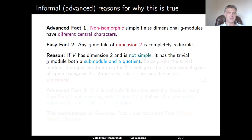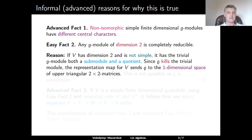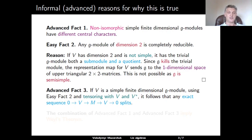An easy fact is that any G-module of dimension 2 is completely reducible. If we have a G-module of dimension 2 which is not simple, then it must have a one-dimensional sub-module and a one-dimensional quotient. The only one-dimensional G-module is the trivial G-module. Since G kills the trivial G-module, by choosing a basis in V such that each element of G is represented by an upper triangular matrix, we can take into account that both simple sub-quotients are killed by G, and so we must have zeros on the diagonal. This means the image of G should be contained in the one-dimensional space of upper triangular 2×2 matrices. However, there are no semi-simple complex Lie algebras of dimension 1, and therefore the image of G must be 0.